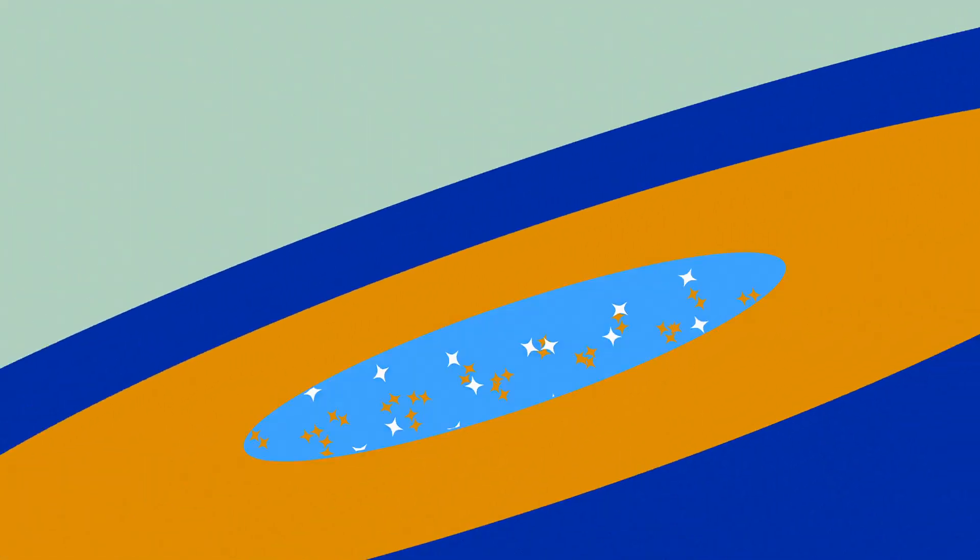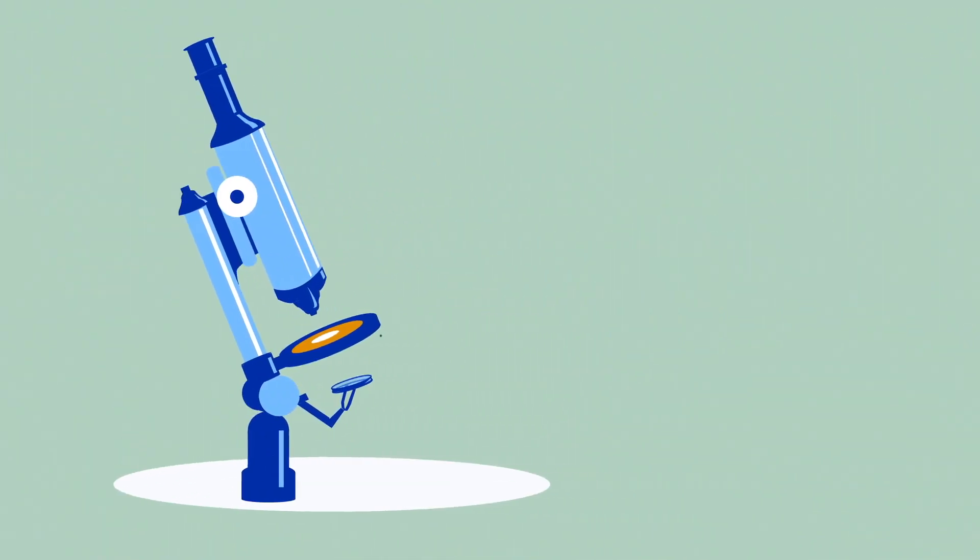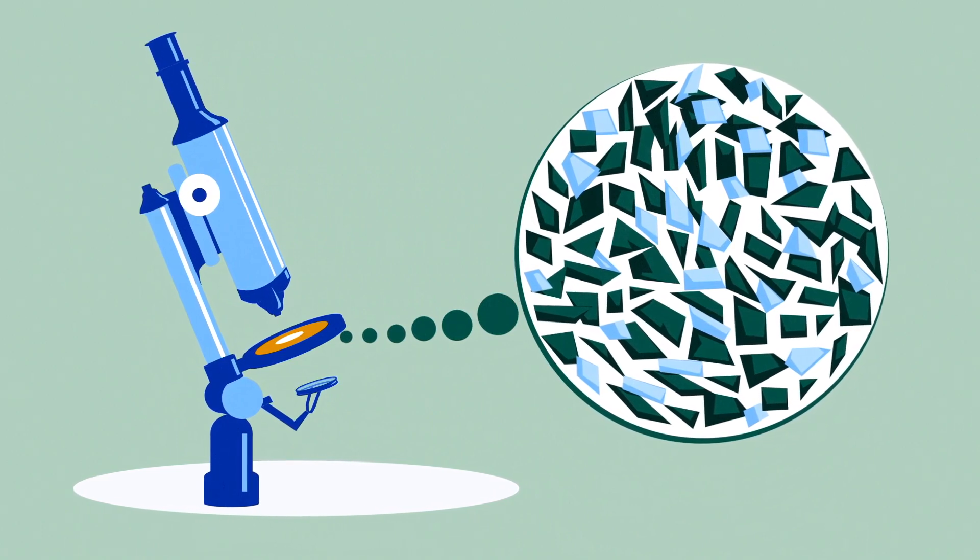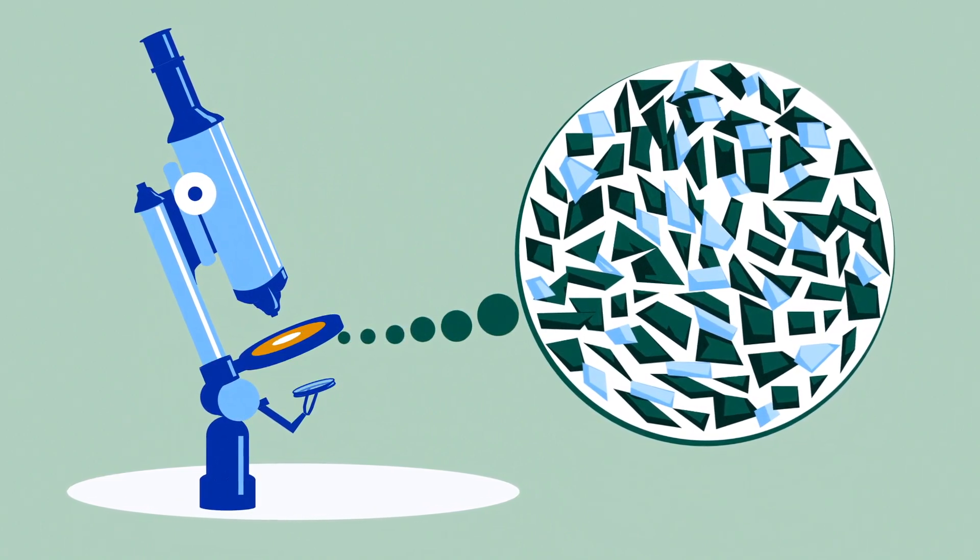Microscopy is a quintessential technique used to understand the microcosm around us. Since the 17th century, microscopes have used visible light to provide a magnified view of miniature objects, enabling scientists to make breakthrough discoveries.